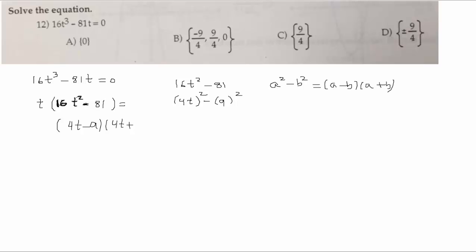4T. What's your B? 9. So this would be 4T minus 9, 4T plus 9. And then at this point, you let each parenthesis equal to 0.